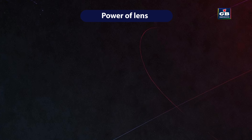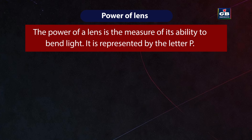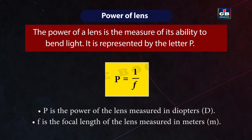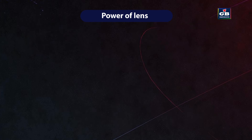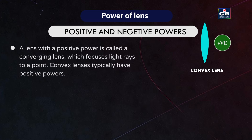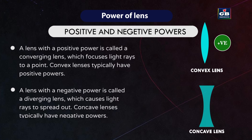Power of a lens is a measure of its ability to bend light, represented by P. The power of a lens of focal length f is given by P = 1/f. It is measured in diopters (D), where f is in meters. A lens with positive power is a converging lens; a lens with negative power is a diverging lens. Concave lenses have negative powers.